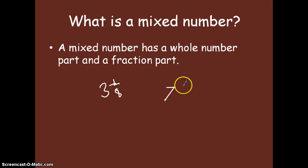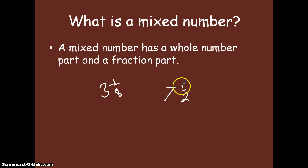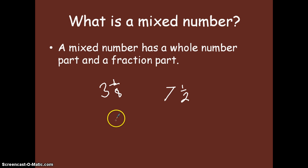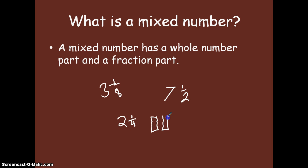I could do a million of these — 7 and 1 half. That is a mixed number. Once again, we have a whole number part, 7, and then we have our fraction part, one half. Let's say that we were very hungry and we ate 2 whole candy bars and then we had 1 fourth of another candy bar. We could say this is a candy bar, this is a candy bar, and then our fourth of a candy bar would look a little bit like that.